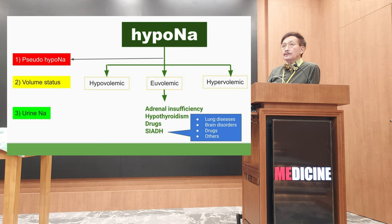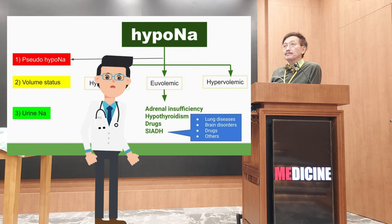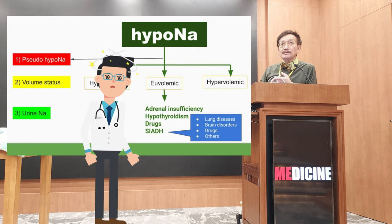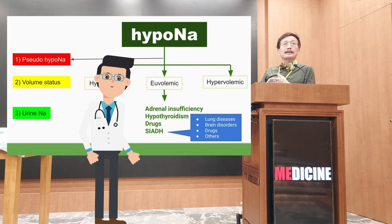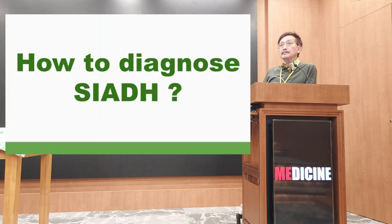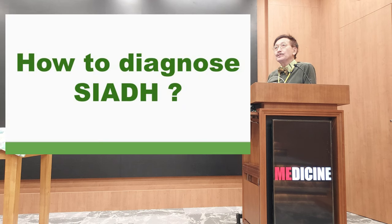C lung, for example. So lung disorder is one cause. The other one is CNS — brain disorders, starting from concussion — can cause hyponatremia. And how do you diagnose it? Not by exclusion. So how do you diagnose SIADH?